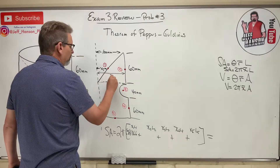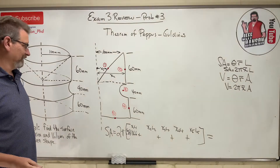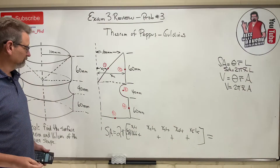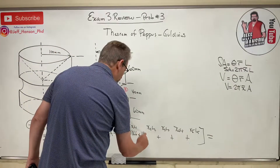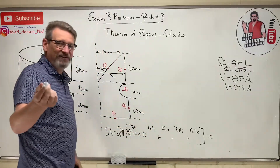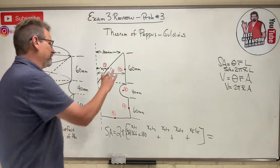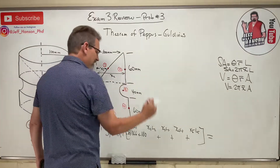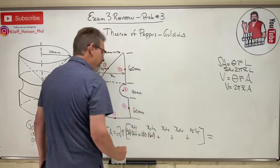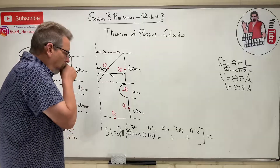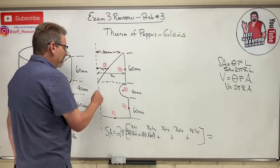For piece two, where is the dot? It's at x = 100. The length of that line is simply 60. So piece two contributes 100 × 60.